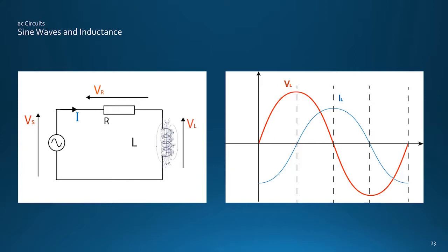In this case, the inductor voltage is maximum at the points where the current is changing most rapidly. That is, when the current is passing through zero. And zero when the current is not changing. That is, when the current is at a maximum or minimum.